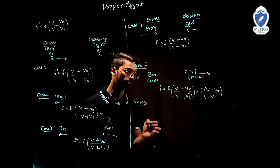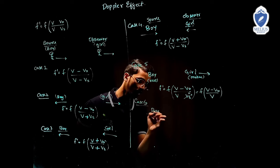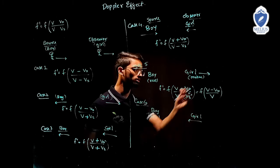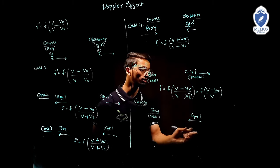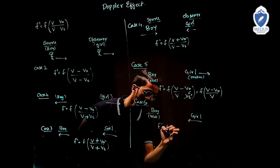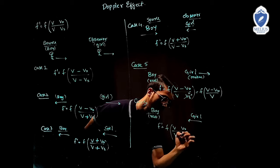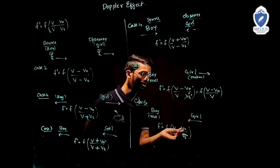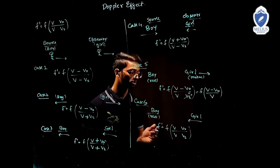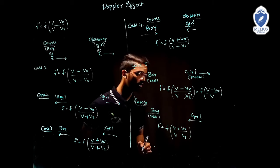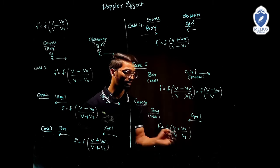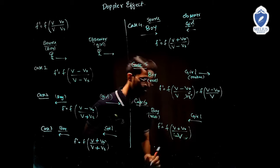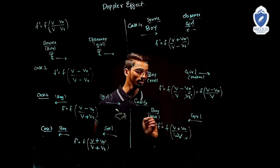Case 6: the boy is still at rest, but now the girl is moving towards the source. Observer coming towards the source wants to increase the frequency — numerator is increased by adding V_O with a plus sign. The boy is at rest, so V_S = 0. Final formula: F' = F × (V + V_O) / V.